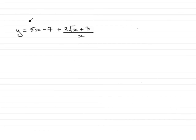Now, in this part of the question, we're given y equals 5x minus 7 plus 2 root x plus 3 all over x, and asked to find dy by dx.